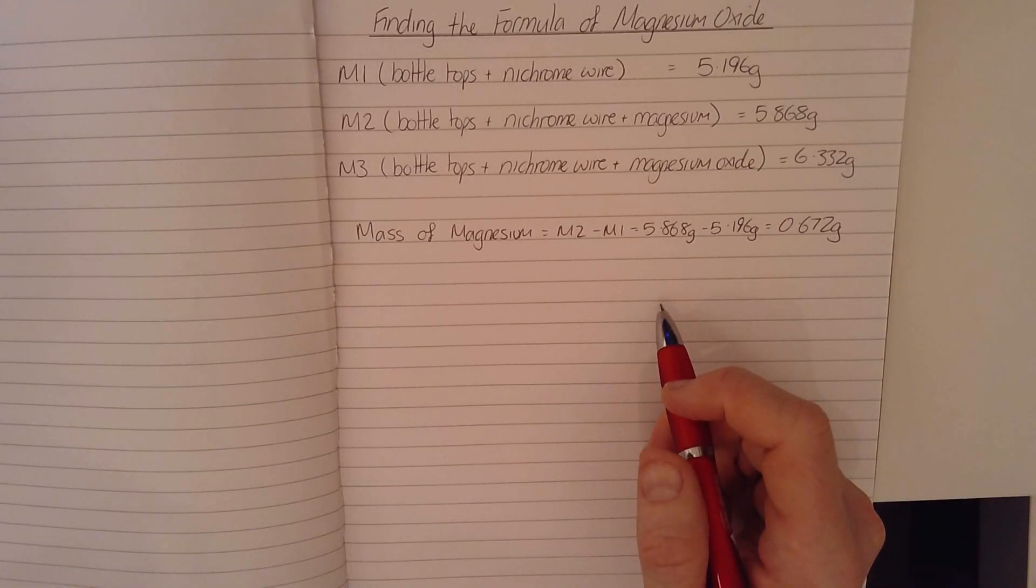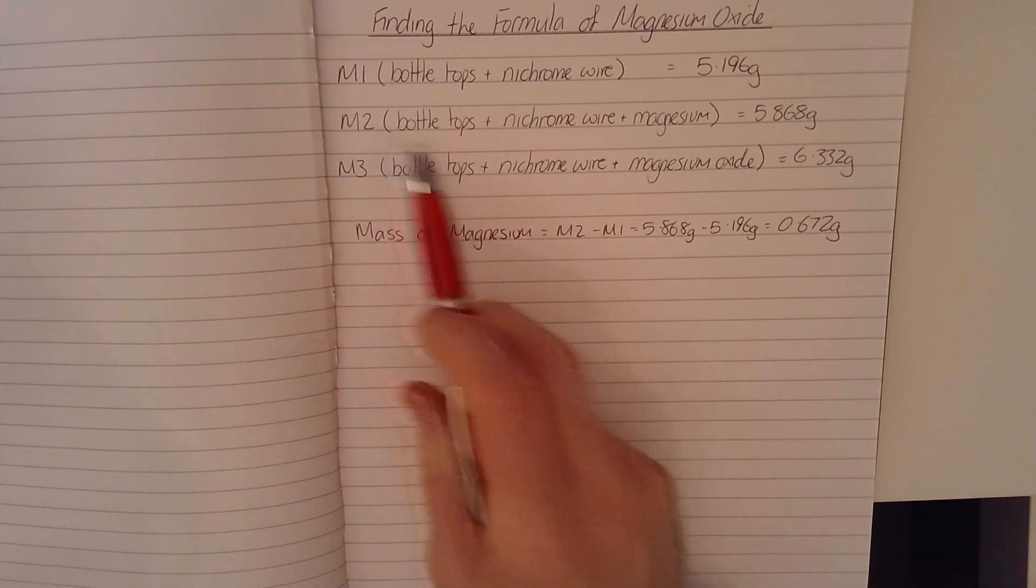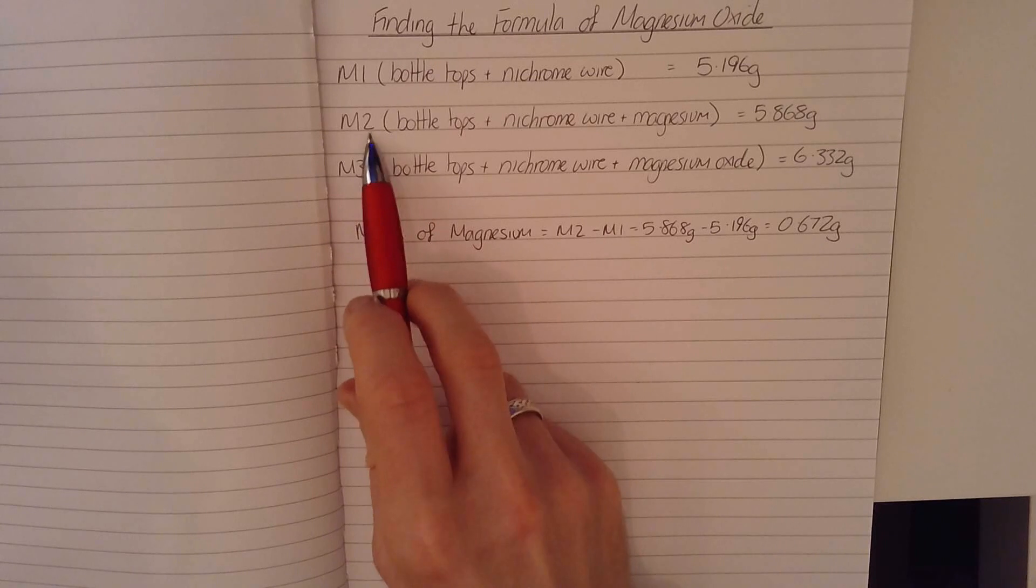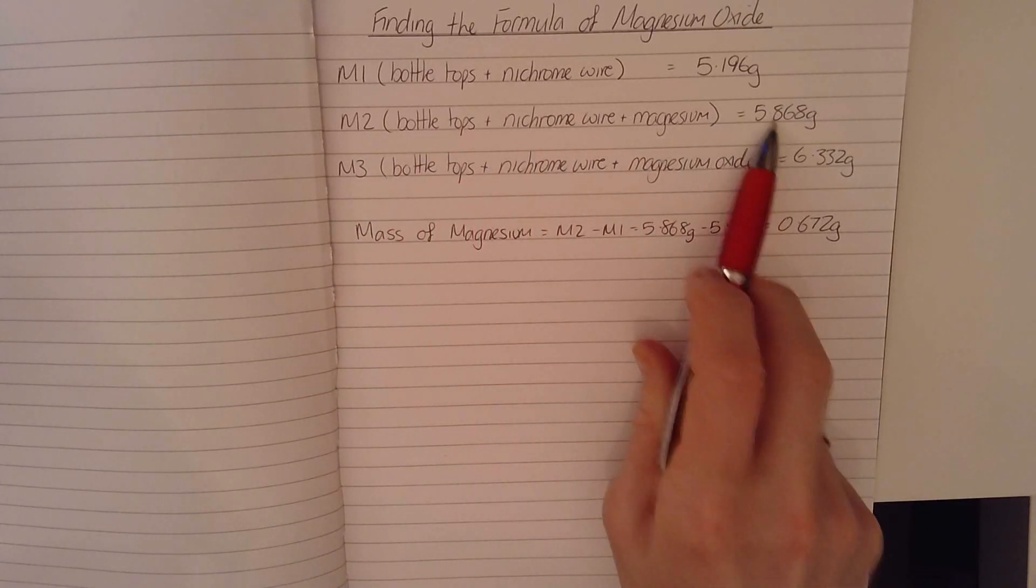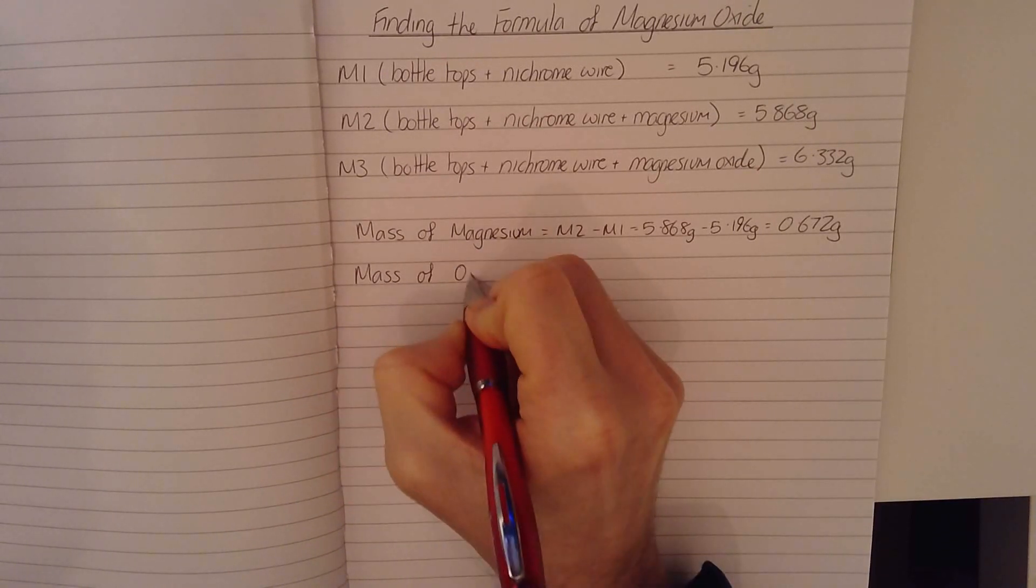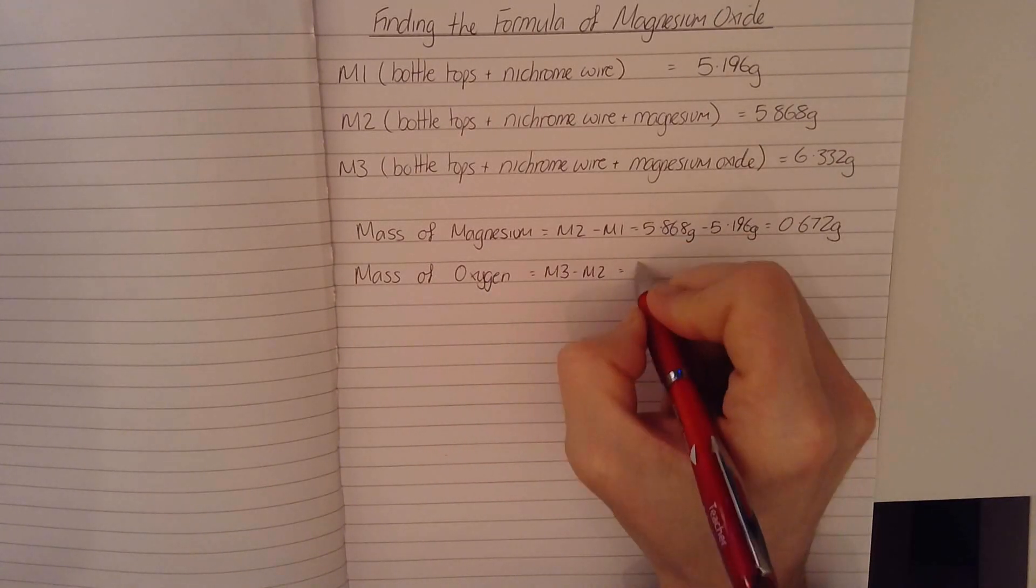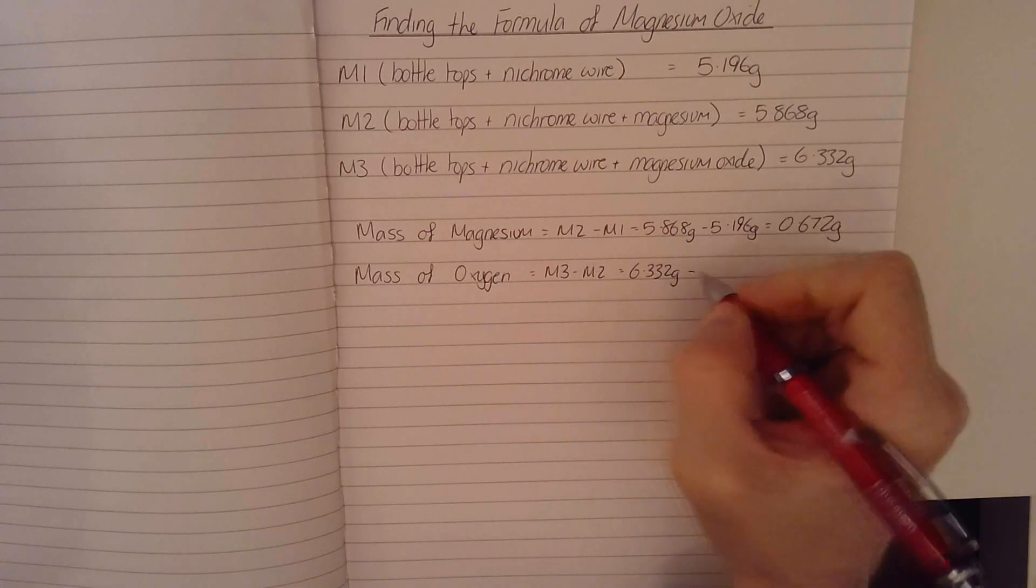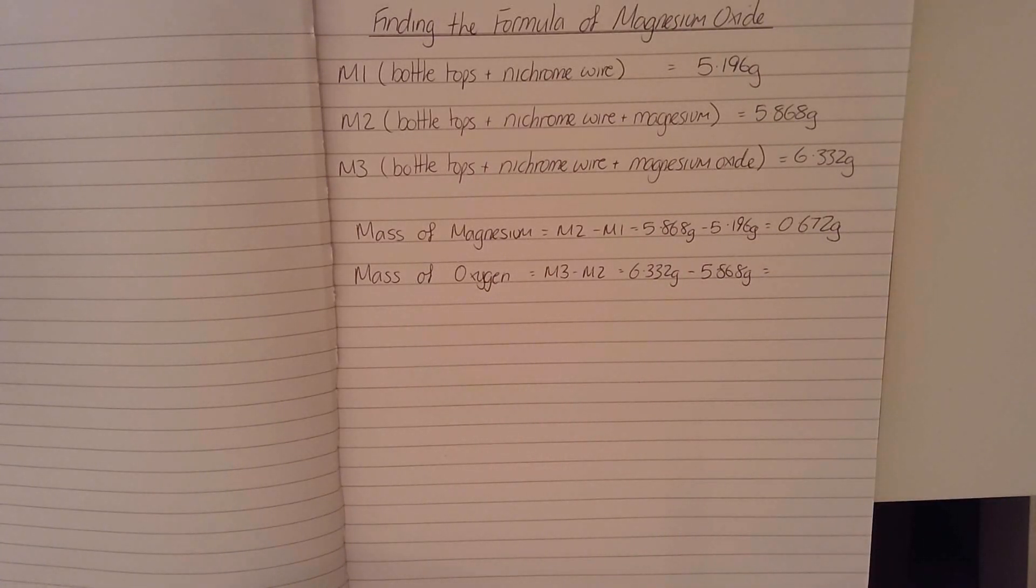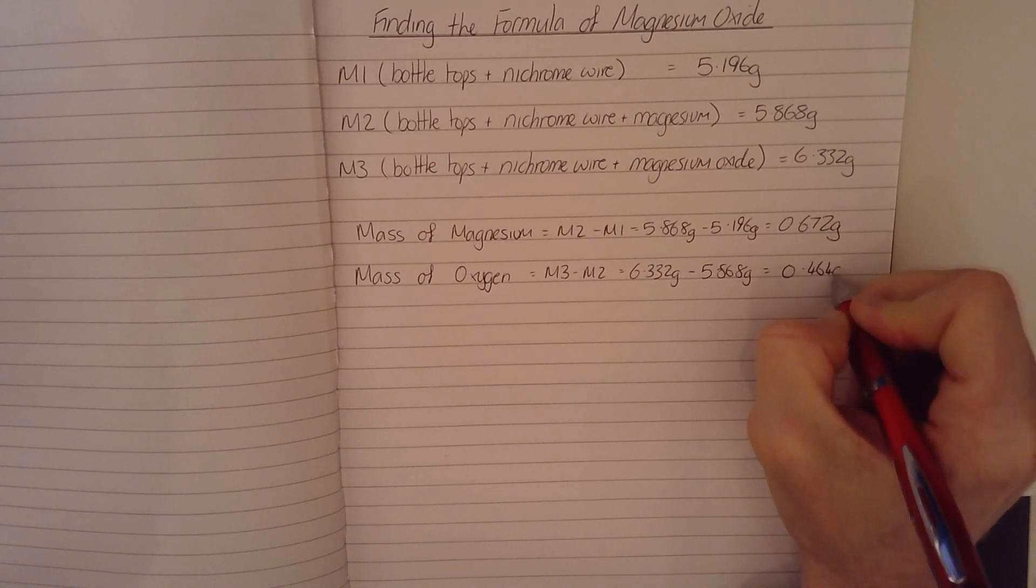Now I can work out the mass of oxygen that has bonded onto my magnesium by taking M3 and subtracting M2. Because M3 was the bottle tops plus the wire plus the magnesium oxide compound, and M2 was the bottle tops and the nichrome wire and just the magnesium. So this difference in mass here is from the oxygen. So the mass of oxygen is equal to M3 minus M2 equals 6.332 grams minus 5.868 grams. And that comes to 0.464 grams.